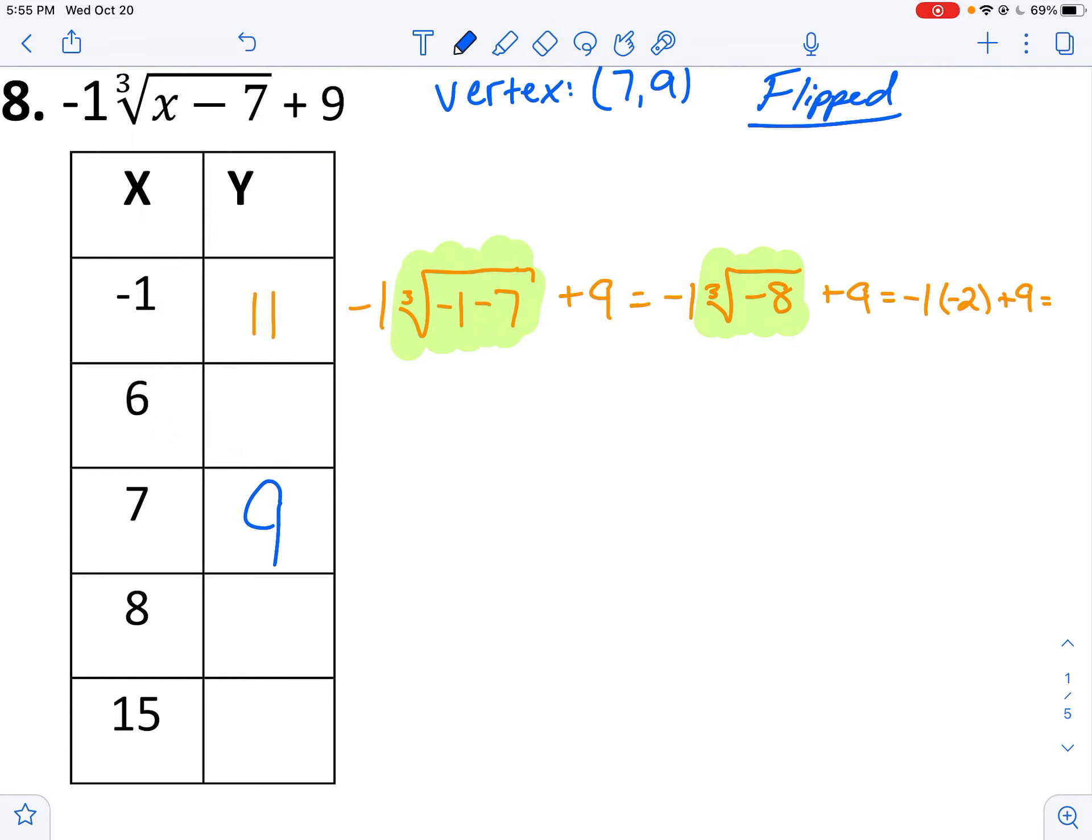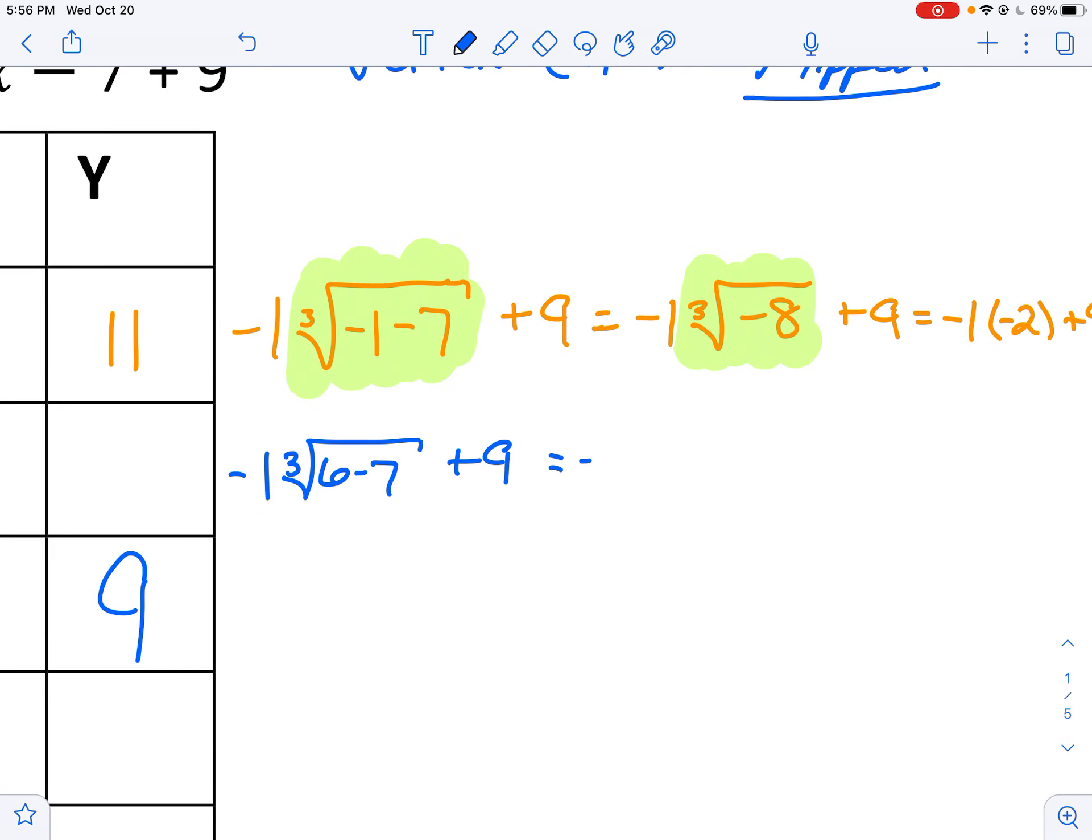Alright. I'm going to help you get set up here. Negative 1 up front. And again, you've got to remember that negative 1 the whole time. I'd like you to try the rest of this one. Simplify your cube root. Simplify your cube root until you can't simplify it anymore. Then remember to multiply by the negative 1 and add the 9.